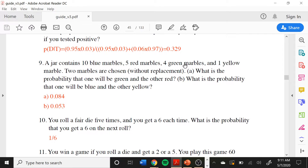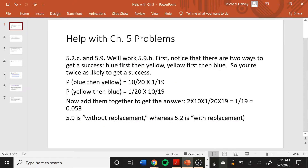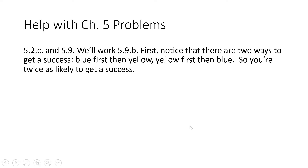For problem nine, you have a jar that contains 20 marbles — some blue, red, green, yellow, etc. You're going to remove two marbles, but you don't put one back, so this is done without replacement. What is the probability that one of these marbles will be blue and the other yellow? Notice there are two ways we can get a successful outcome: we could get a blue marble first and then a yellow marble, or we could get a yellow marble first and then a blue marble.